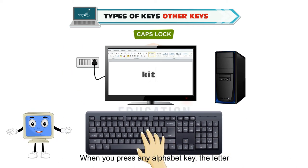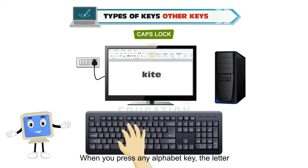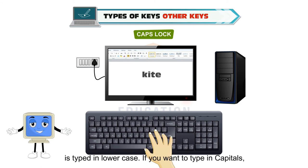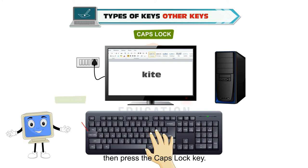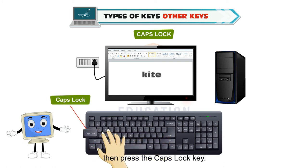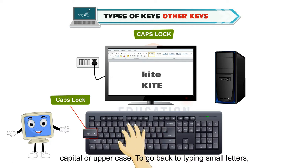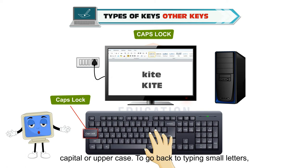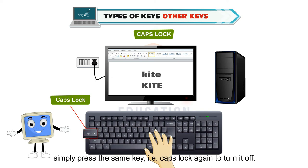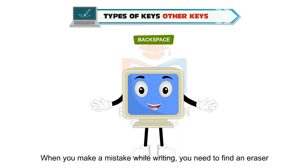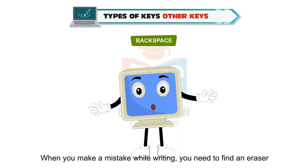When you press any alphabet key, the letter is typed in lowercase. If you want to type in capitals, then press the Caps Lock key. When the Caps Lock key is on, then all the letters you type will be in capitals or uppercase. To go back to typing small letters, simply press the Caps Lock key again to turn it off.